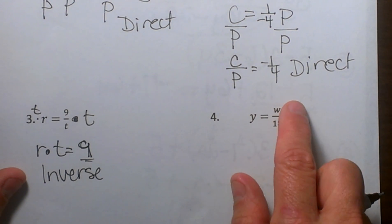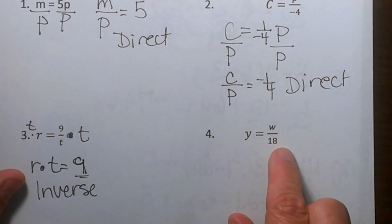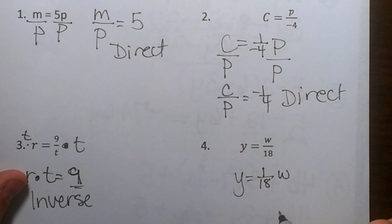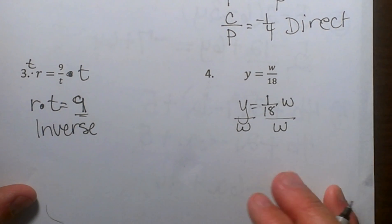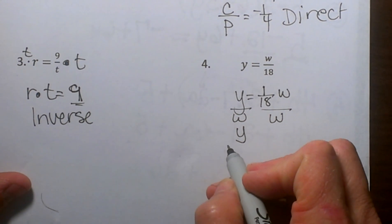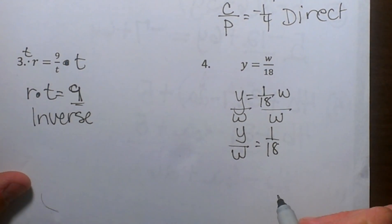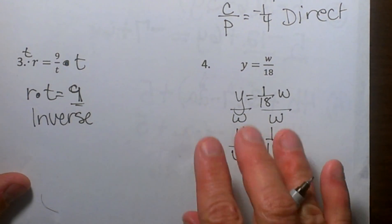y equals w over 18. Again I'm going to pull my equation apart and make this one eighteenth times w. So I can see my fraction here. So I am dividing my variables.